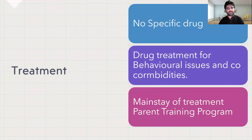The treatment is biopsychosocial. For biological treatment, there is no specific drug to treat Conduct Disorder, but certain drugs are available to deal with behavioral issues and comorbid conditions. The psychosocial treatment is the main stage of treatment, among which the parent training program is the first-line treatment.